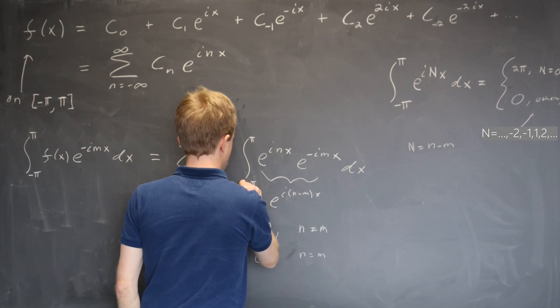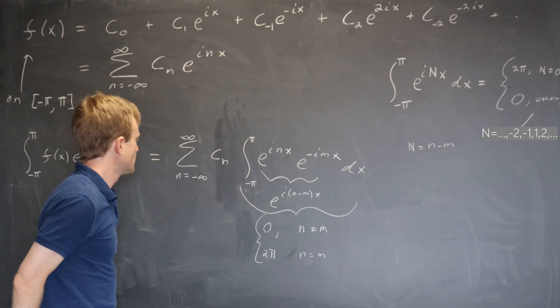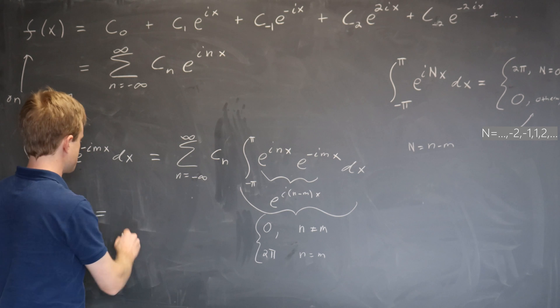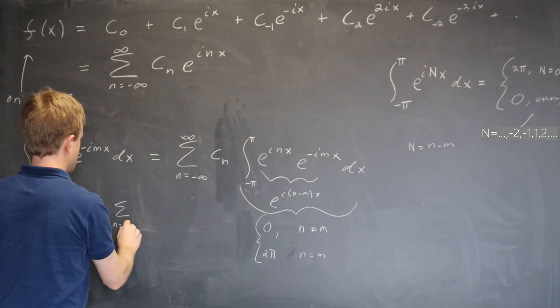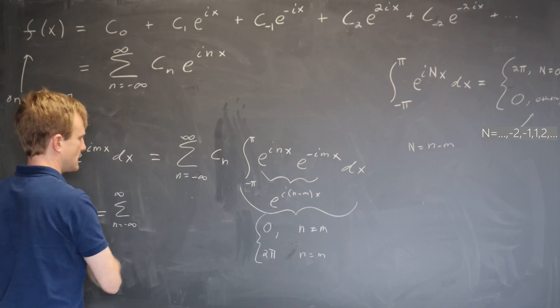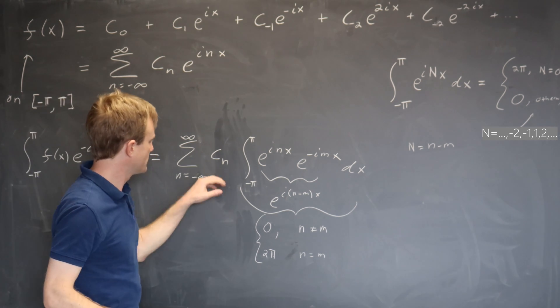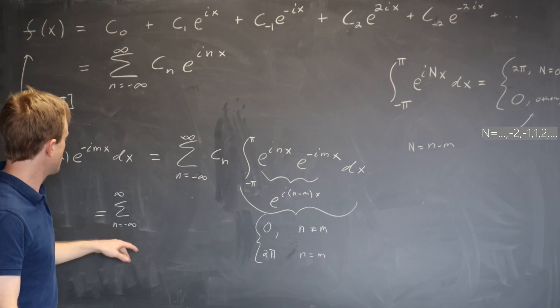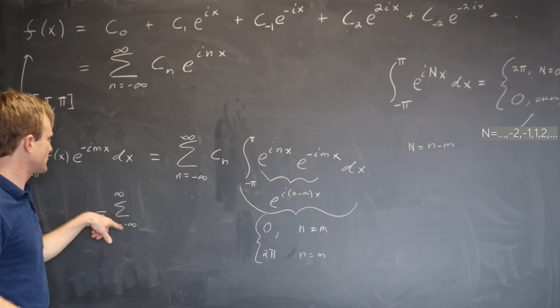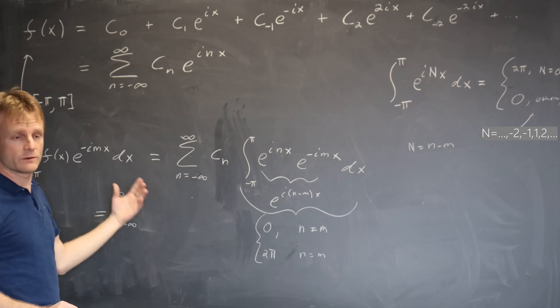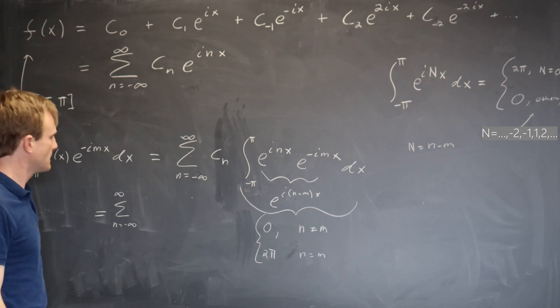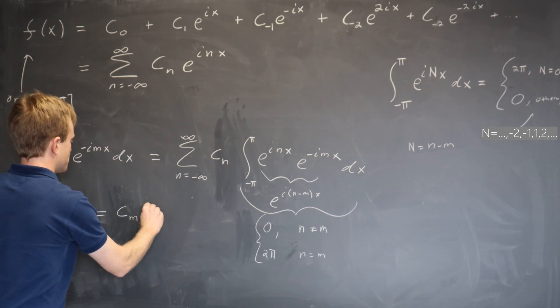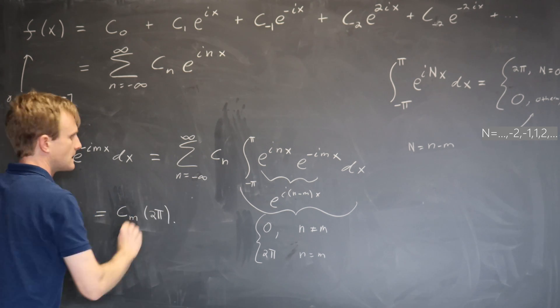So that, if you like, is this whole integral here. And then that tells us that what we have on the right-hand side is a sum from n equals minus infinity to infinity of c sub n times this thing. But this thing is zero unless n equals m. So, say m equals seven. All the other terms in this sum, like n equals two, n equals three, those aren't seven, and so those are just zero. So, in fact, we don't have a sum at all. All we have here is c sub m times two pi.